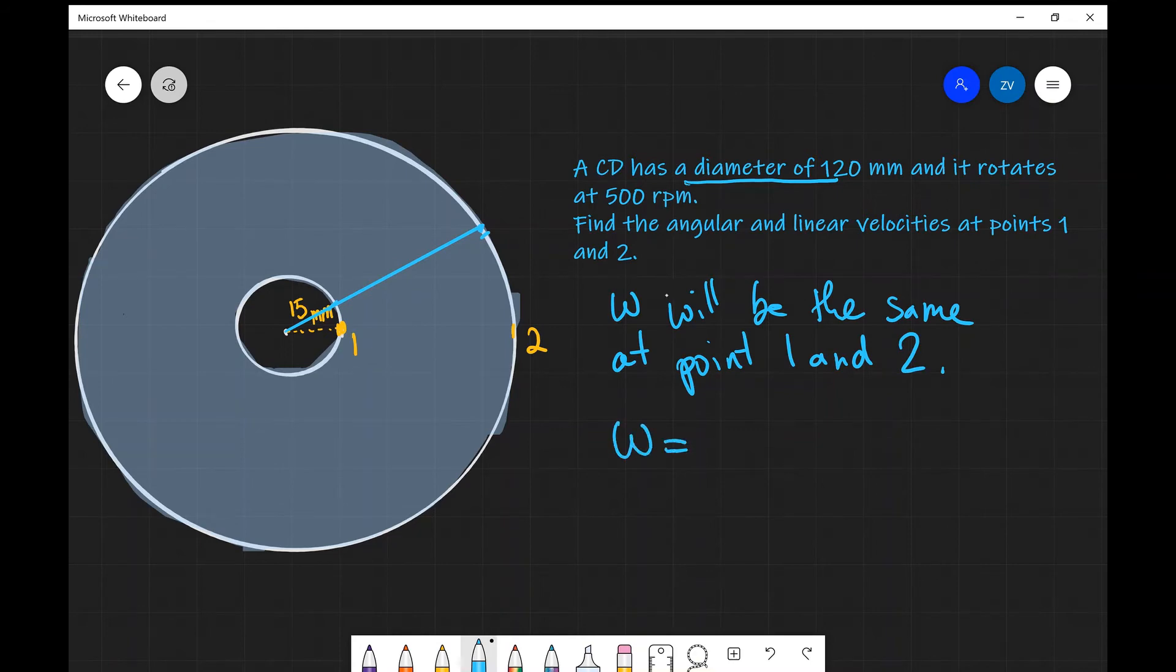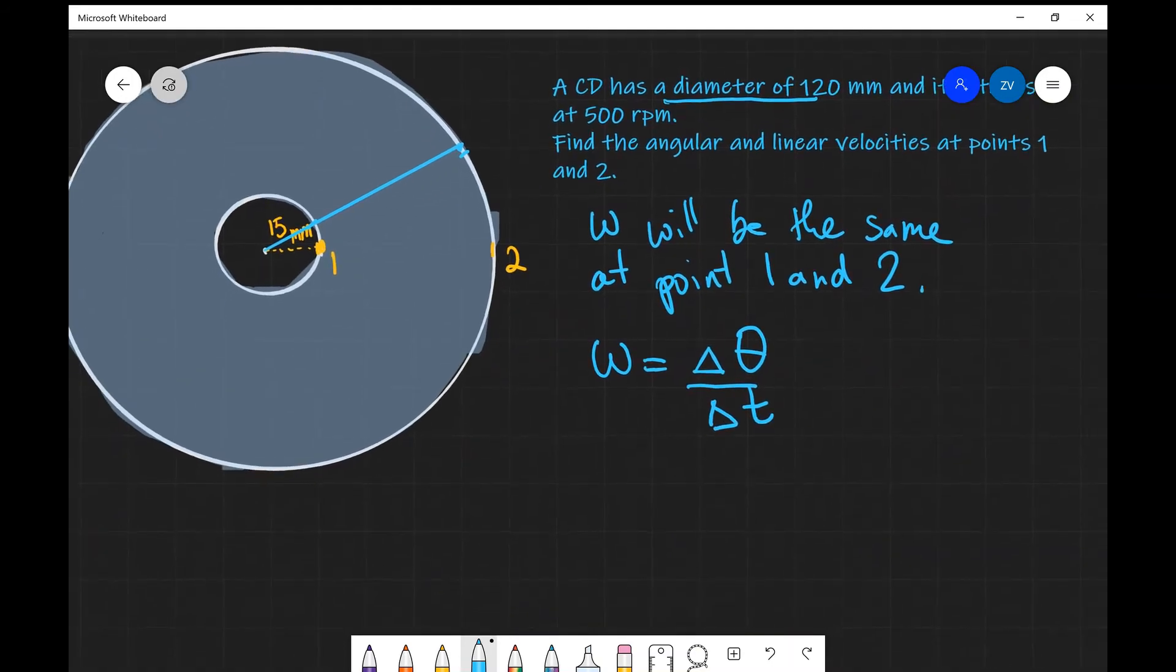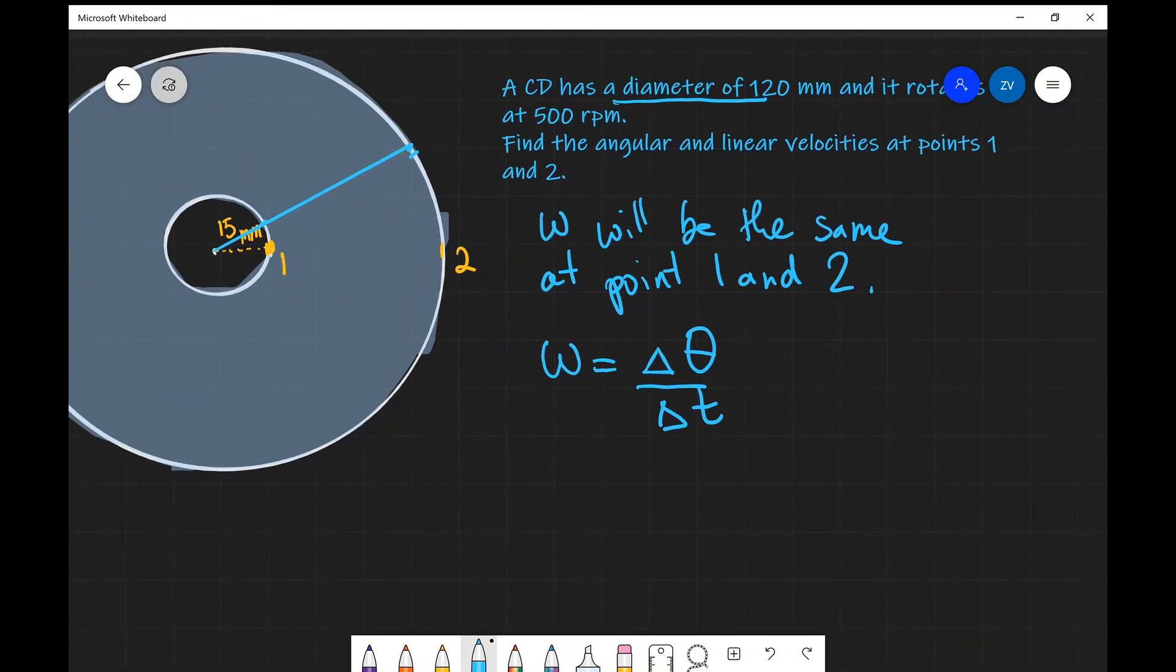So omega is equal to our angular displacement divided by our time. Now how can we convert revolutions per minute to radians per second? Let's think about this. If we have our 500 revolutions per minute,